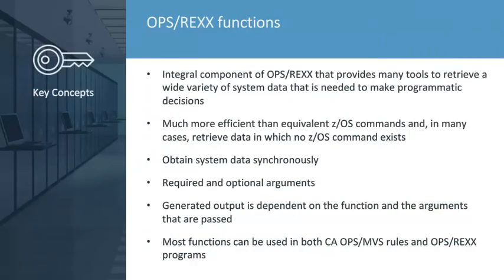CA OpsMVS functions are a key component of the product. They are more effective than issuing the equivalent ZOS command and, in many cases, retrieve data for which no ZOS command exists. The primary reason that makes the functions more efficient is that they can obtain the desired system data synchronously. For example, if you are processing a critical system event within an OpsMVS message rule and you need to determine if a particular STC or batch job is active, using the OpsStatus function will allow the logic of the rule to immediately obtain this status information. This is in contrast to the rule having to invoke an asynchronous OpsRex program that could possibly run seconds or longer after the event, and whose logic would need to issue the ZOS display active job name command and extract and manipulate the output. All functions have required and optional arguments, and the returned output will be dependent on the function and the arguments that are being passed. Most of these functions can be used in both OpsMVS rules and OpsRex programs.